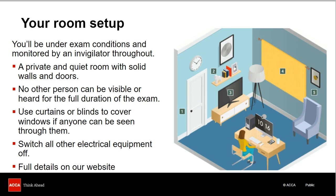The room must have solid walls and door — these can't be glass or partitioned by a curtain. If you have windows where people may be visible outside, these must also be closed over with blinds or a curtain. Make sure all other electrical equipment is switched off, and of course you can't have any books or visual aids lying around. The image you can see is taken from an infographic resource available on our remote session exam webpages — access this to help you set up your room appropriately.